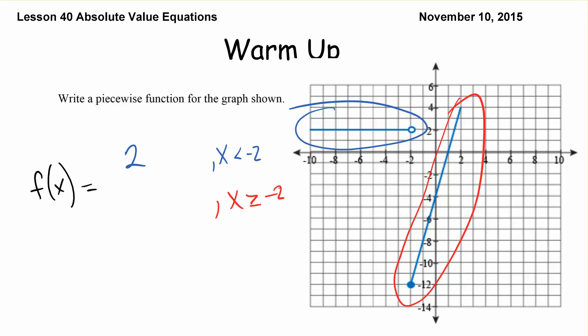We can see that our y-intercept is negative 4 and it looks like we're going up, what are we going, up 4 over 1. So our slope is 4. So our equation would be 4x minus 4 for x values that are greater than or equal to 2.